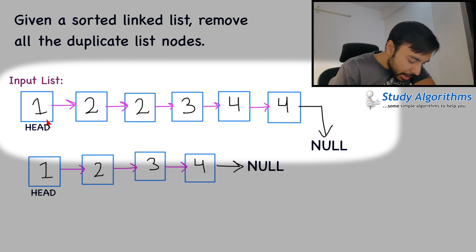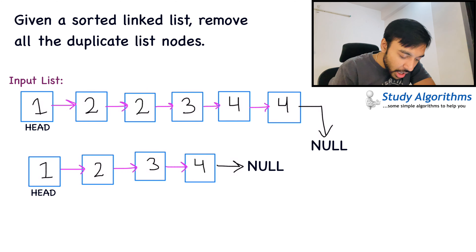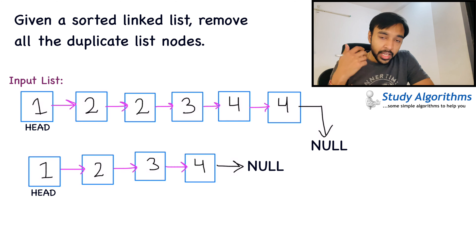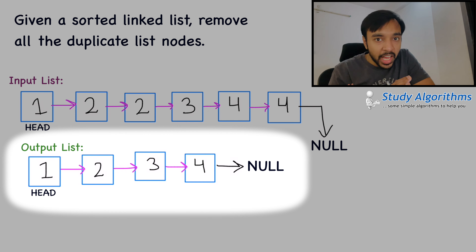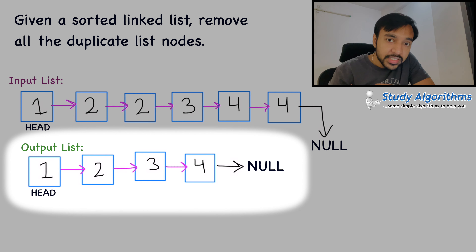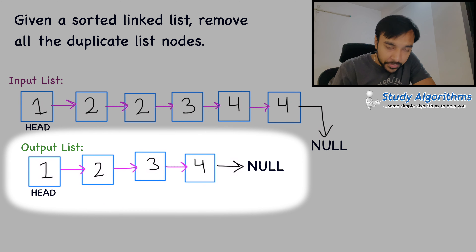If you see a linked list, we have the element 1, then we have the element 2 which is repeated, next we have the element 3 and once again you have the element 4 which is repeated again. Note that this list is sorted, so all of these repeating elements would occur one after the other. Now what you need to do is return a new list that does not have any duplicates — all the duplicates should exist only once. So in the output list, we have element 1, then 2 which appears only once, then 3, then 4, and then null.